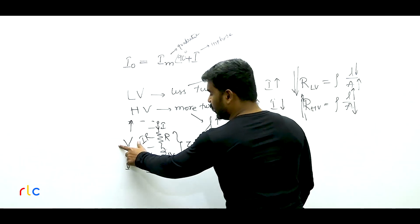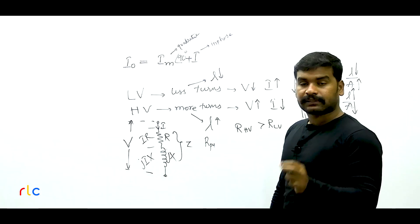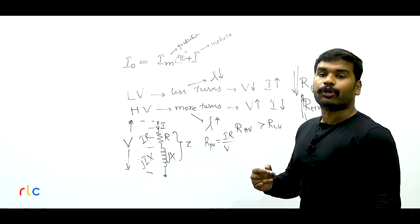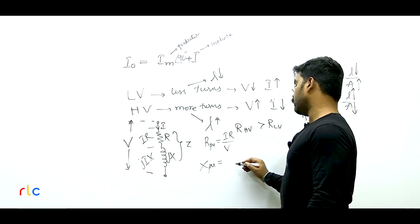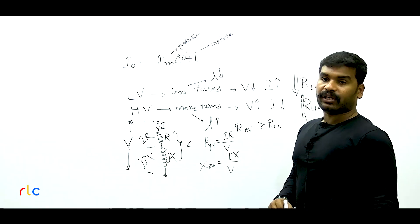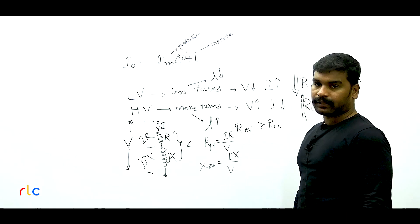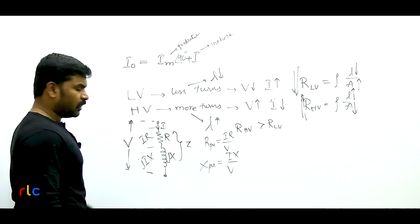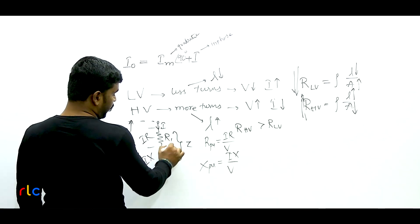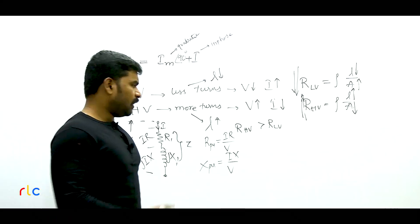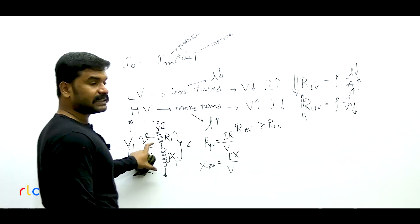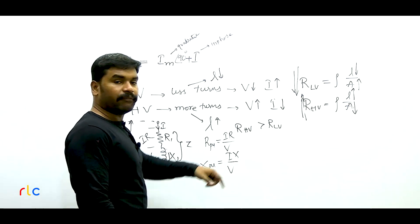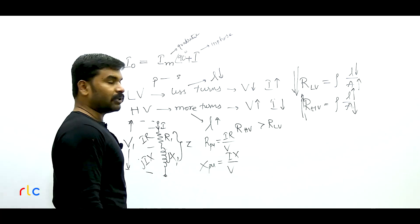Eddy current loss is proportional to thickness squared — higher thickness means higher eddy current losses. Transformer X (thinner laminations) will have lower eddy current losses. Regarding cost: thinner laminations mean more laminations needed, increasing both manufacturing and insulation costs. High-frequency transformers use very thin laminations; low-frequency transformers use thicker laminations. Operating frequency is inversely proportional to lamination thickness.